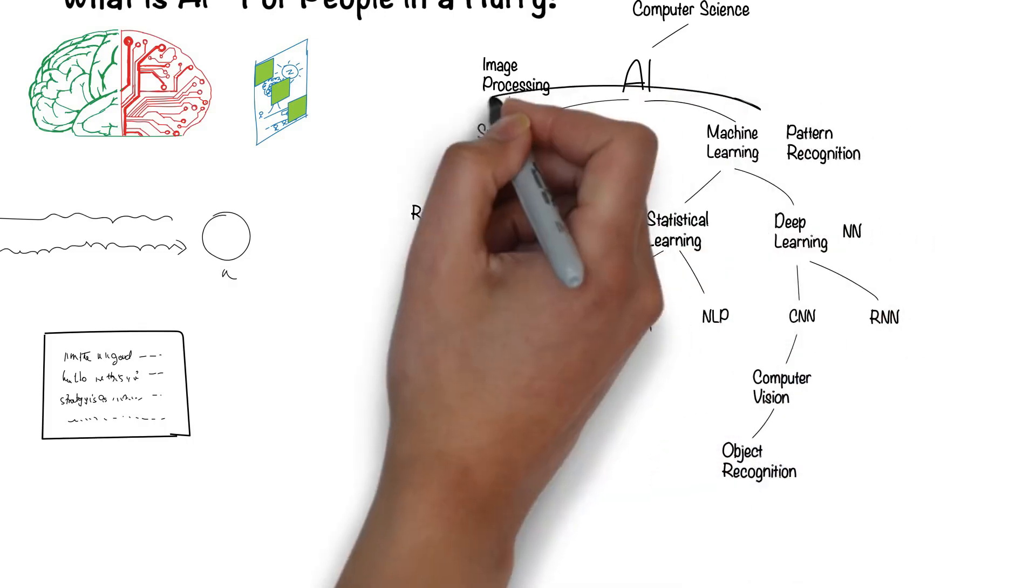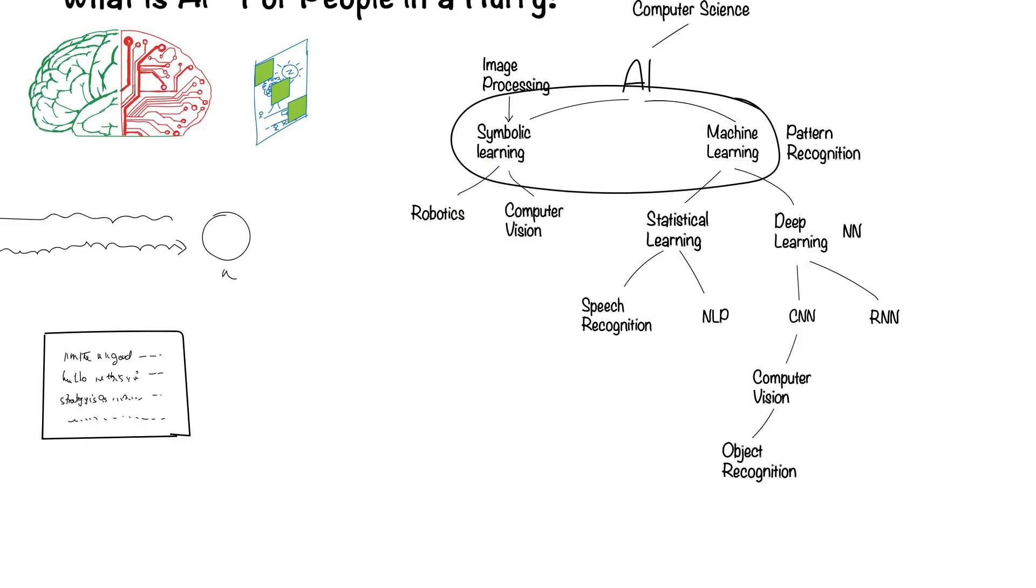As you see, there are two ways AI works. One is symbolic-based, and another is data-based.